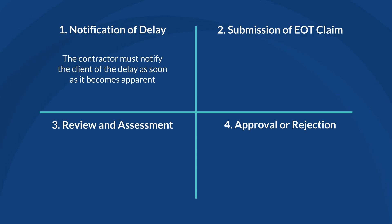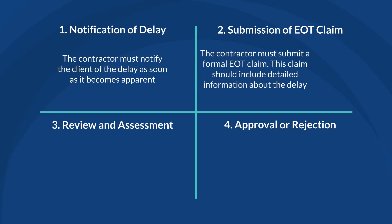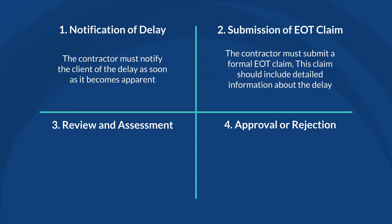Number 2: Submission of EOT Claim. Following the initial notification, the contractor must submit a formal EOT claim. This claim should include detailed information about the delay, including the start and end dates of the delay, the impact on the project program, and any supporting documentation. It is also important to quote any contractual clauses that relate to your EOT.